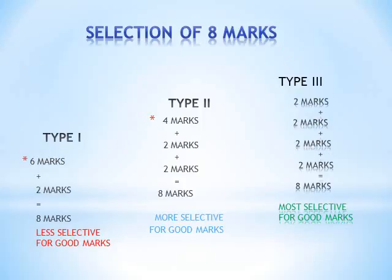Next, an important thing is the selection of 8-mark questions. 8 marks are of 3 types. Type 1 is 6 marks plus 2 marks, totaling 8 marks. This is less selective for good marks, because if anything goes wrong in the 6-mark part, we will definitely get less marks out of 8.